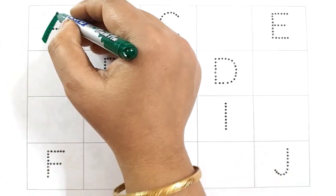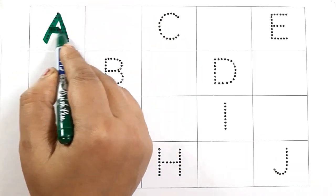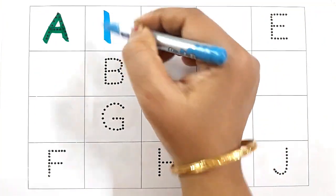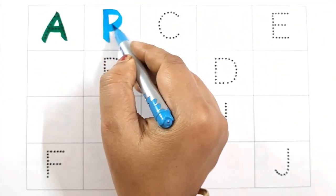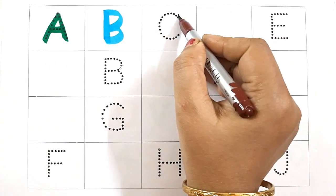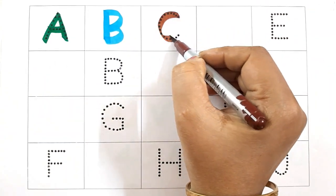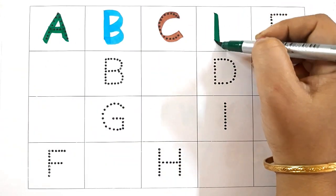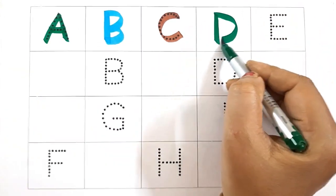A, A for Ant. B, B for Ball. C, C for Car. D for Dog.